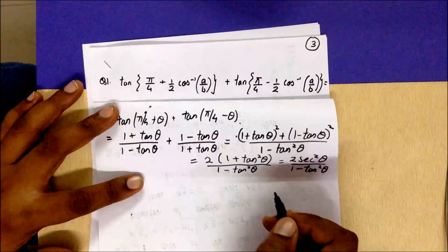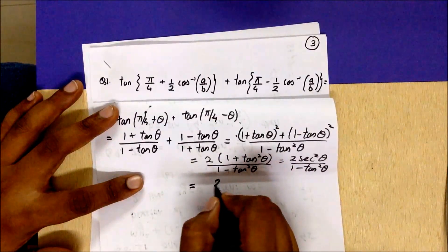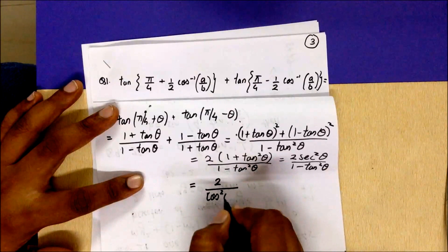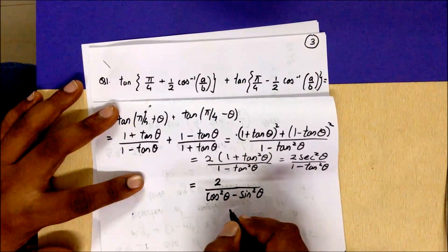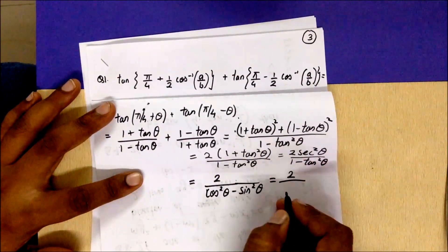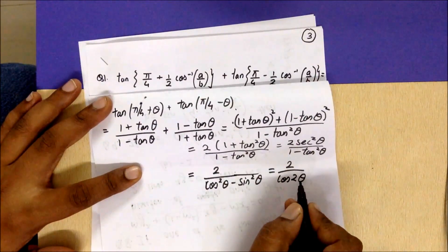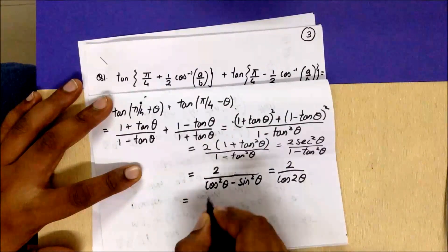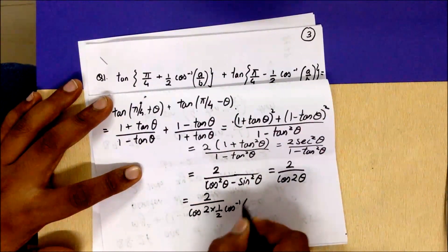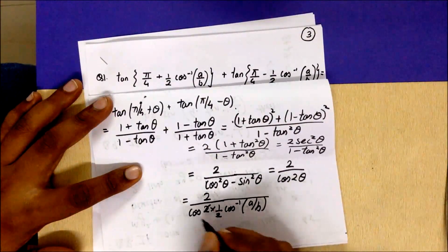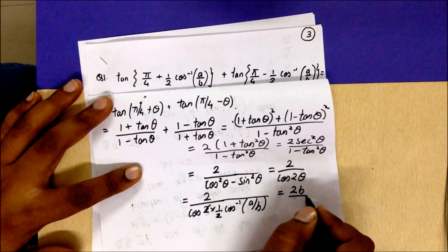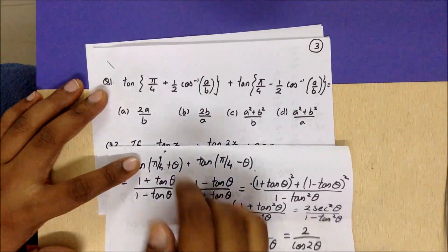Converting sec and tan to sine and cosine: 2/cos²θ divided by (cos²θ − sin²θ)/cos²θ. The cos²θ cancels, giving 2/(cos²θ − sin²θ), which is 2/cos(2θ). Substituting θ = (1/2)cos⁻¹(a/b), the 2 cancels with the (1/2), and cos(cos⁻¹(a/b)) = a/b. So the answer is 2b/a, which is option B.